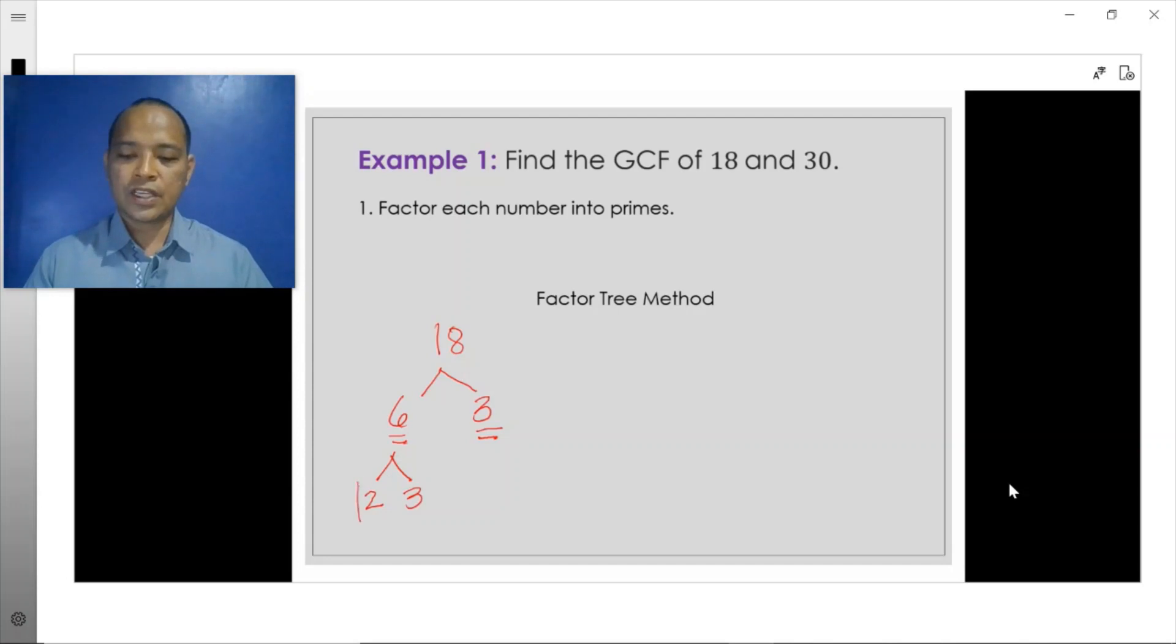Now, all of these numbers are now prime numbers, so we stop decomposing the number 18. And this would give us 18 is actually equal to 2 times 3 times 3. Therefore, 18, as a product of prime factors, can be expressed as 2 times 3 times 3.